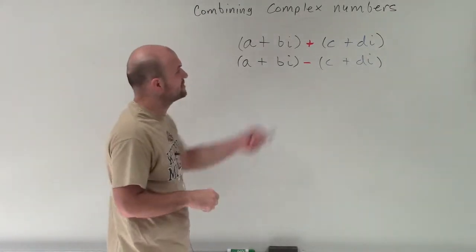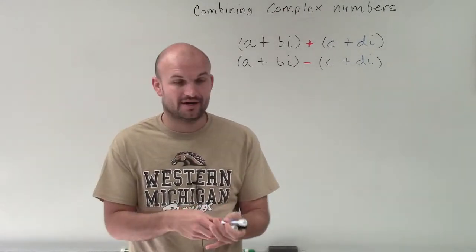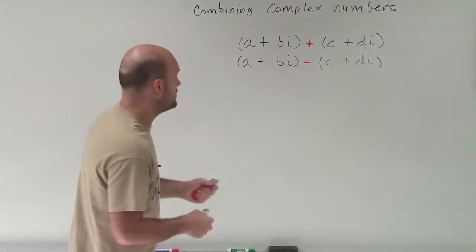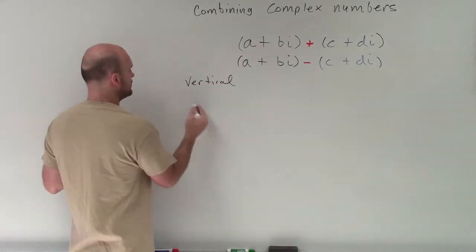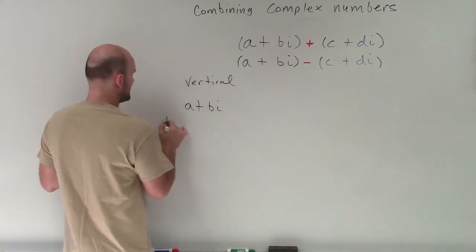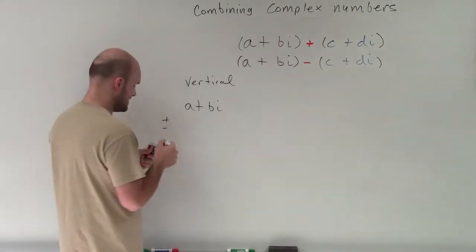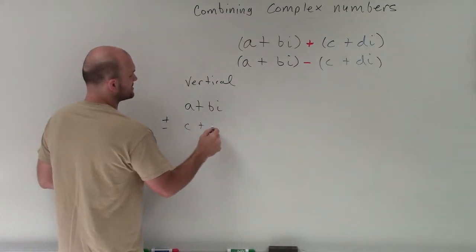Now, there's a couple different ways we can do this. I'm going to use both of them. One thing I like to use is what we call the vertical method. The vertical method just states that if I have a plus bi, it doesn't matter if I'm going to add or subtract, I'm just going to take the other term and put it right below, c plus di.